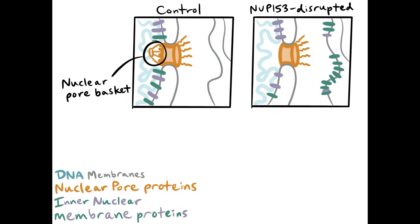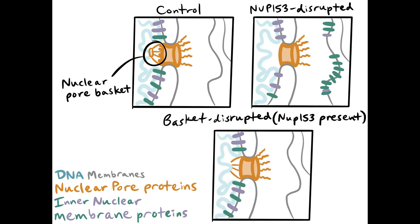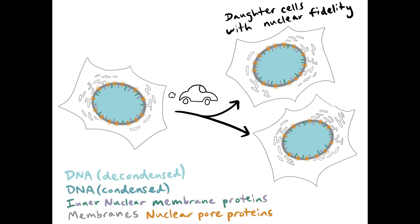Although depleting NUP-153 disrupts the nuclear basket structure, depleting other constituents of the nuclear pore basket in the presence of NUP-153 did not result in inner nuclear protein mis-targeting, suggesting that the basket per se is not the essential factor and points to a specific role for NUP-153. By describing the mechanisms of nuclear assembly, we can better understand how nuclear structure and therefore function is maintained with fidelity following each cell division.